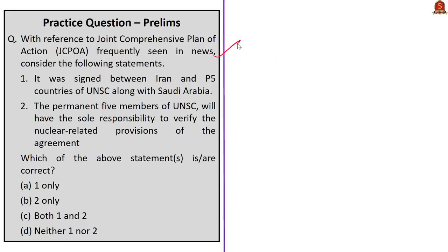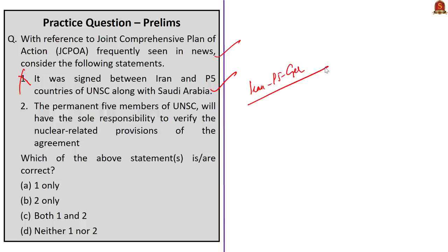Consider the following statements about the Joint Comprehensive Plan of Action. Statement 1: It was signed between Iran and P5 countries of UNSC along with Saudi Arabia. This is incorrect — the deal is between Iran and P5 countries along with Germany, not Saudi Arabia. Statement 2: The permanent five members of UNSC will have sole responsibility to verify the nuclear-related provisions of the agreement. This is also incorrect — compliance is verified by the International Atomic Energy Agency. So both statements are incorrect and the answer is option D: neither one nor two.